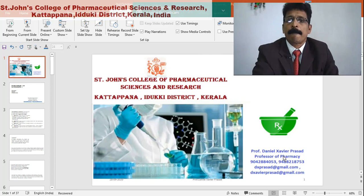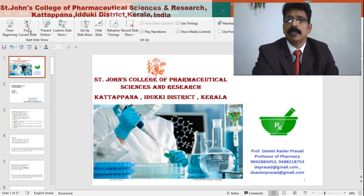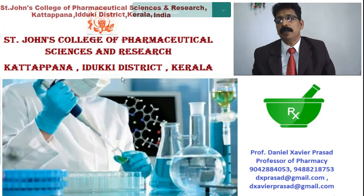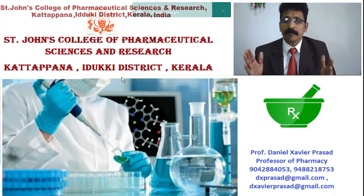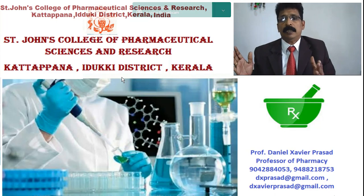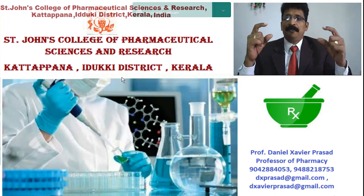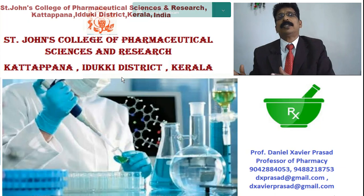Good morning students. Today we are going to start with glycosides. We have already studied cardiac glycosides, their chemical structures, cardenolides, and bufadienolides. Now we have to come across anthraquinone glycosides — aloes, senna, and related topics. Before that, we need to review some general definitions of glycosides and their various classifications.